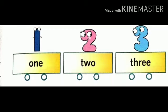Now let's relate the concept of before with numbers. Here we can see number one, number two, and number three. Which is the number before number two? Before number two is number one. Now tell me, which number is before number three? Number two is lying before number three.